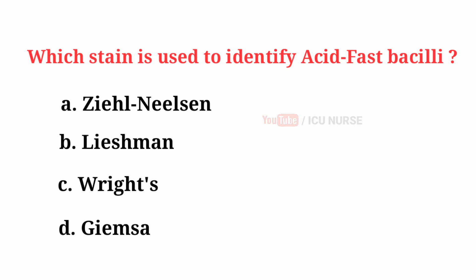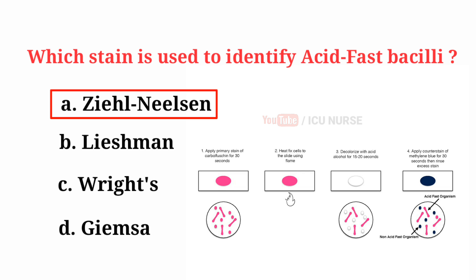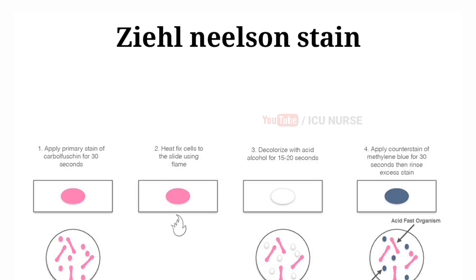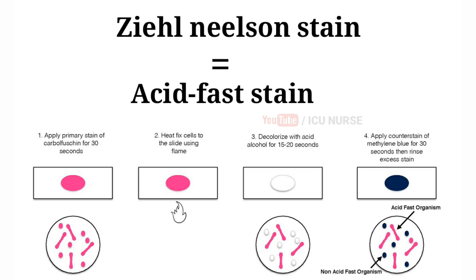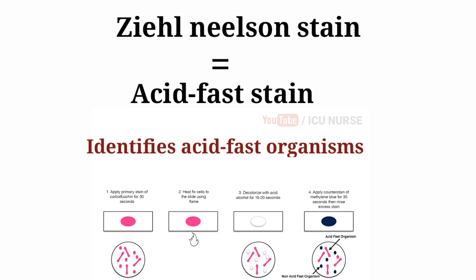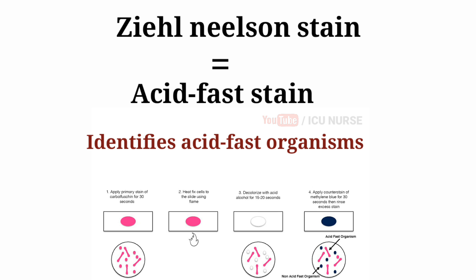Which stain is used to identify acid-fast bacilli? The correct answer is A, Ziehl-Neelsen. Ziehl-Neelsen stain is also known as acid-fast stain. It is a bacteriological stain used to identify acid-fast organisms, especially mycobacteria.